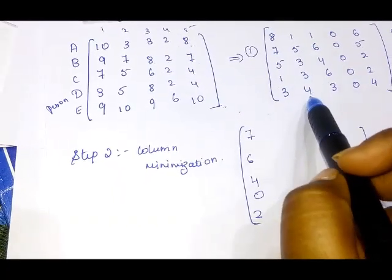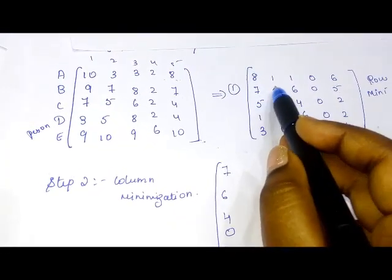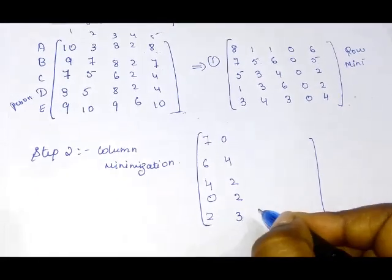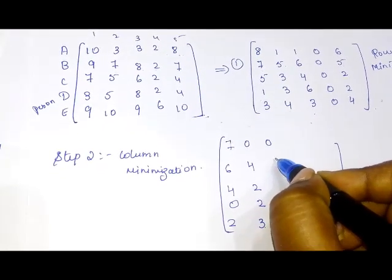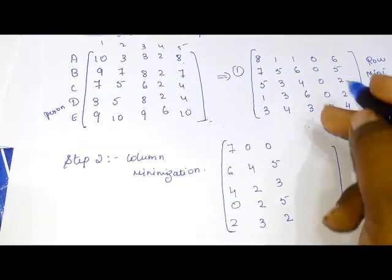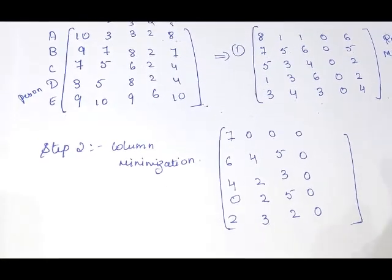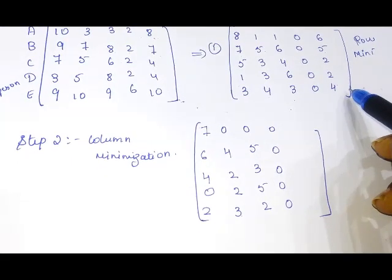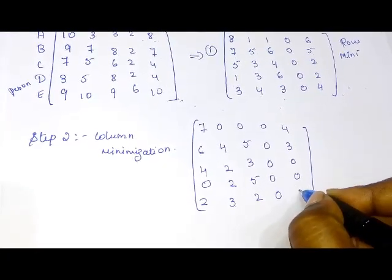In the second column, the least element is 1, so we subtract: 1 minus 1 is 0, 5 minus 1 is 4, 3 minus 1 is 2, 3 minus 1 is 2, and 4 minus 1 is 3. In the third column, the least element is also 1: 1 minus 1 is 0, 6 minus 1 is 5, 4 minus 1 is 3, 6 minus 1 is 5, and 3 minus 1 is 2. In the fourth column, values are retained as is. In the fifth column, the least element is 2: 6 minus 2 is 4, 5 minus 2 is 3, 2 minus 2 is 0, 2 minus 2 is 0, and 4 minus 2 is 2. This is the result of column minimization.